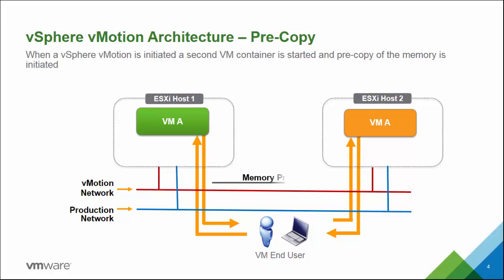With a standard vMotion, we first create a virtual machine process at the destination. In this diagram, I have two ESXi hosts — ESX host number one and ESX host number two. End users are connected to virtual machine A over the production network, and there's a separate network used for vMotion where we copy network services from one host to the other. To move the virtual machine, we first register it on the new host. With file locking, we can't have two instances of the same virtual machine running simultaneously, as this would lead to data corruption and user interruption.